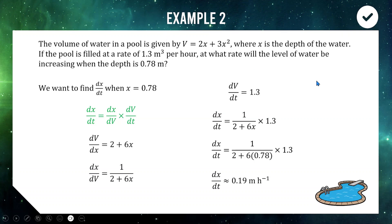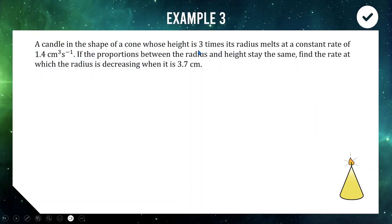Let's try a slightly harder one with Example 3. We've got a candle in the shape of a cone. Its height is 3 times its radius, and it's melting at a constant rate of 1.3 cubic centimetres per second. The proportions are staying the same, so it stays as a cone the whole time. Find the rate at which the radius is decreasing when the radius is 3.7.